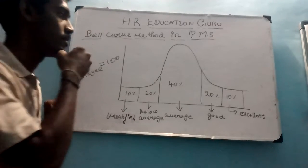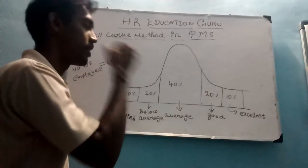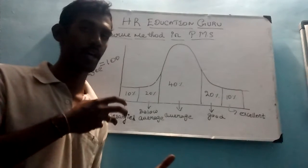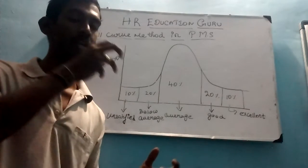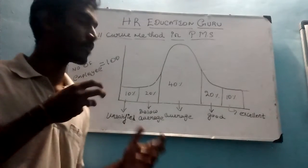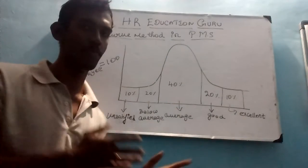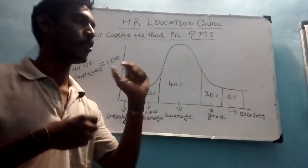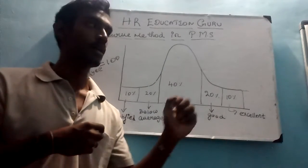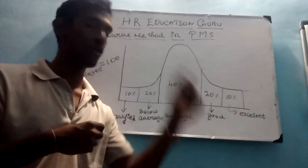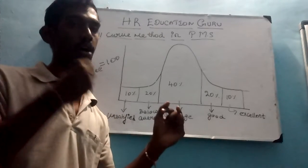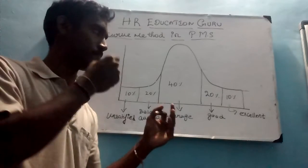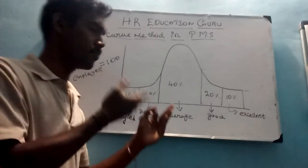After the performance appraisal is done in the organization, you have a bunch of data that contains the performance of each and every employee. So 30% of employees should be rated as excellent. You can motivate them by giving a bonus, incentive, or sometimes a promotion in their position.